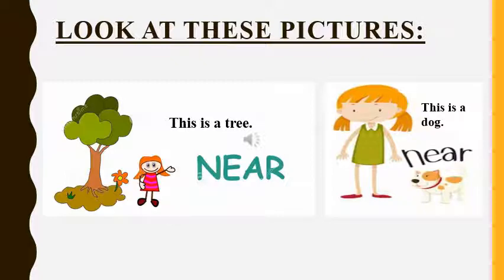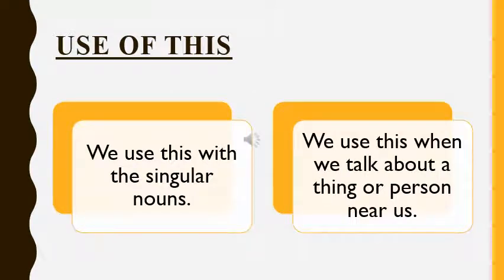Look at these pictures. In the first picture, the girl is standing very near to the tree. So she will use the word 'this' to show the tree. She will say, this is a tree. In the second picture, the girl is standing near to the dog. So she will use 'this' to show the dog. She will say, this is a dog. The word 'this' is used with singular nouns. We use 'this' when we talk about a person or a thing very near to us.